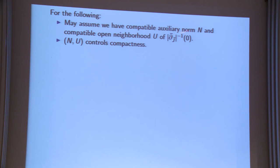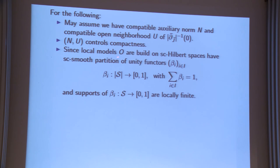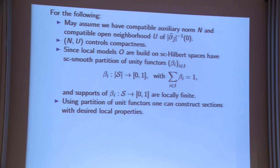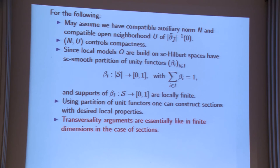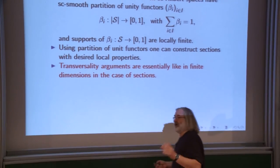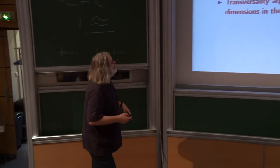For the following, we assume we have a compatible auxiliary norm, a compatible neighborhood, and it controls compactness. Since the local models are built on SC Hilbert spaces, we have smooth partitions of unity so that the supports are locally finite. These things can be used to patch together and construct the SC plus multi-section functors — I explained last time how to construct them. You can construct them controlling derivatives, and whatever you want. Whatever you can dream up in finite dimensions regarding transversality, you can do on this level.